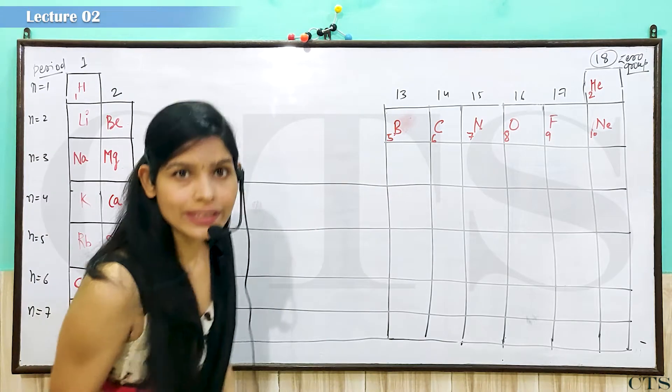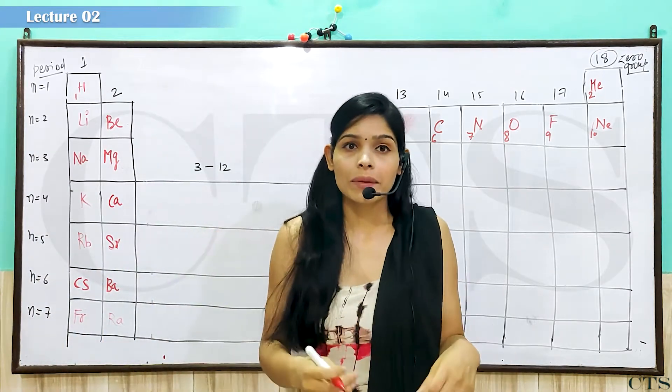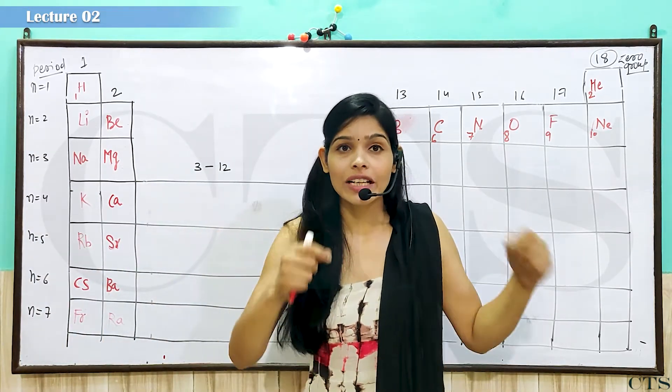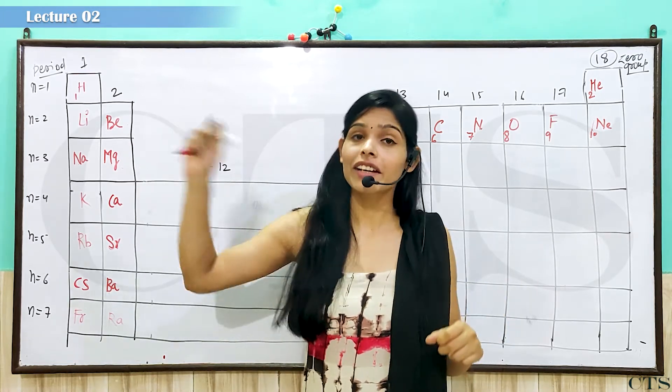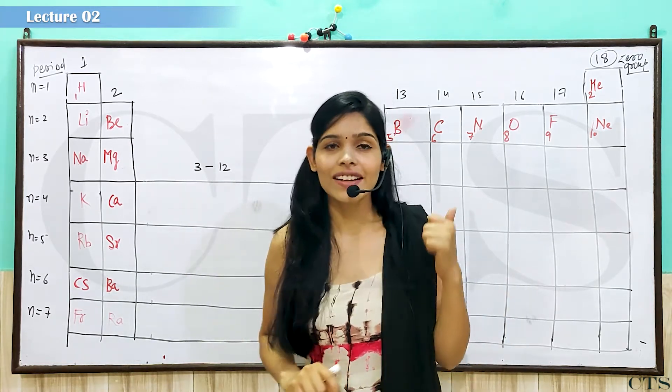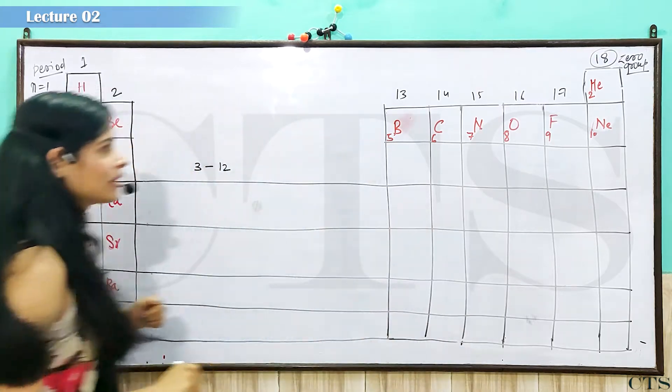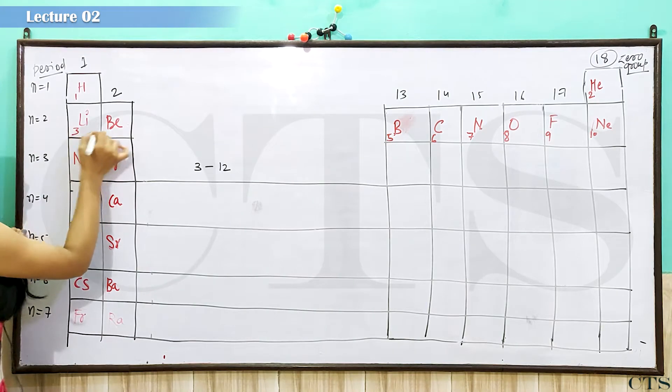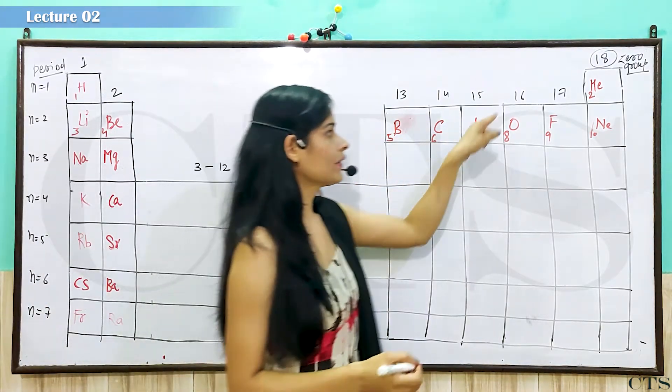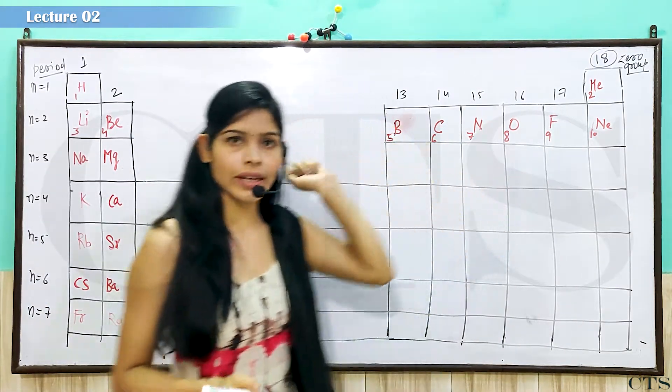Mozlej nai bhol dhiya tha ki physical or chemical properties, periodic function ho tait atomic number ka. Toh hum zara check to kare, kya yah sara atomic number line se hai. Dhekhye beta ji, one, two, lithium ka kitna ho tait, three, four, five, six, seven, eight, nine, ten.